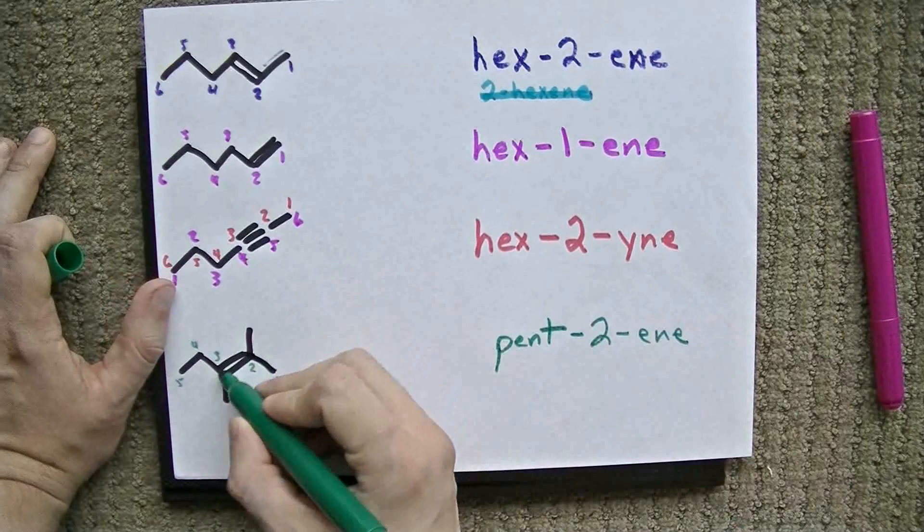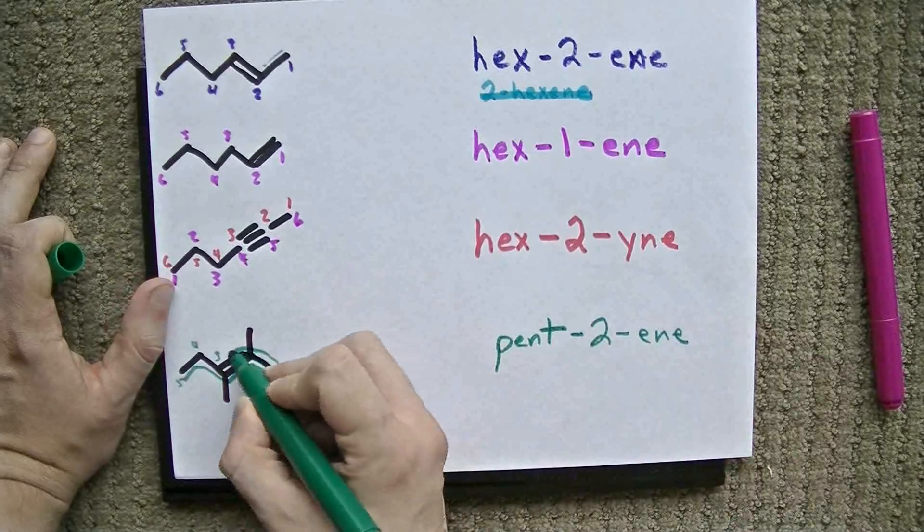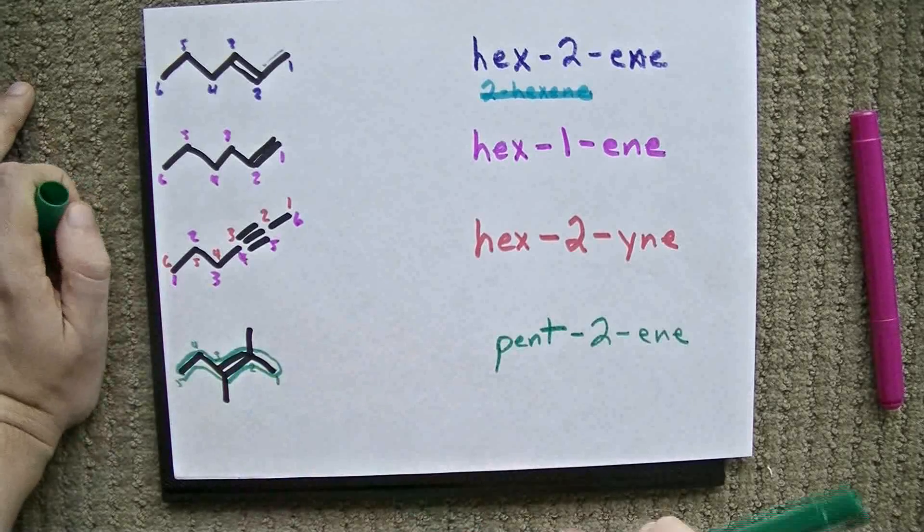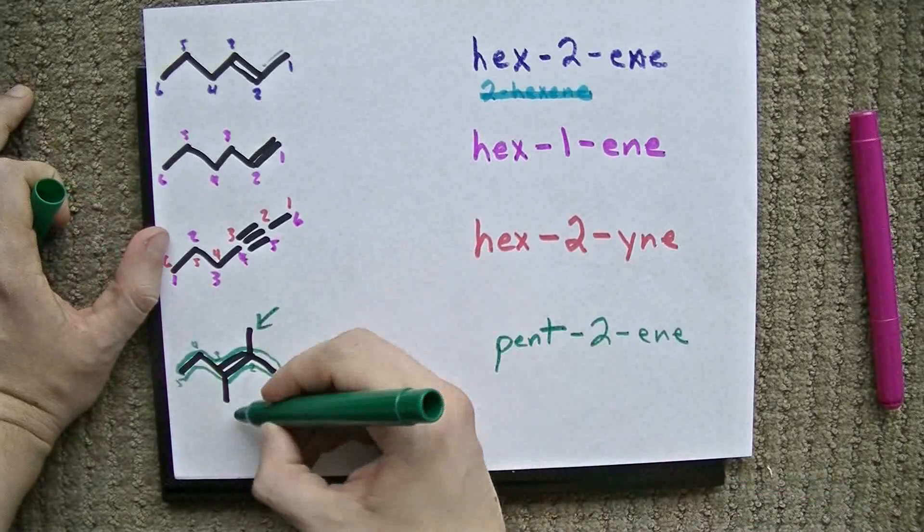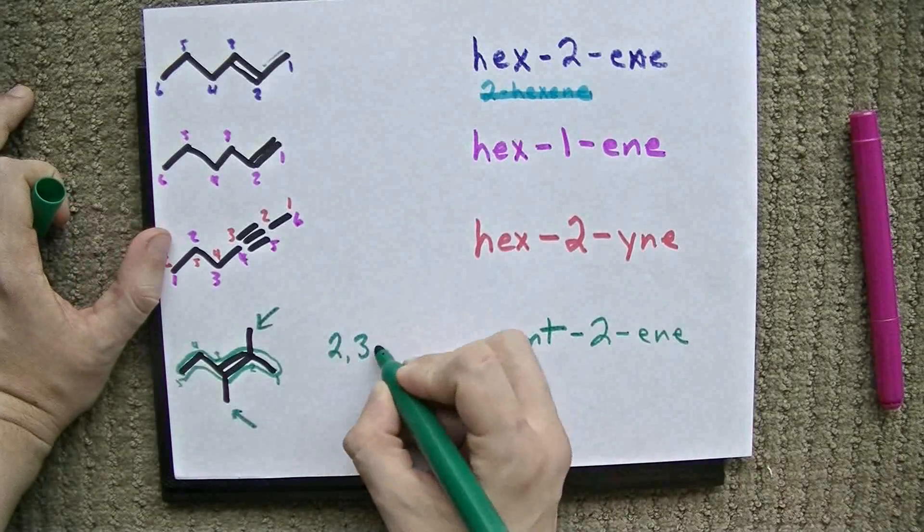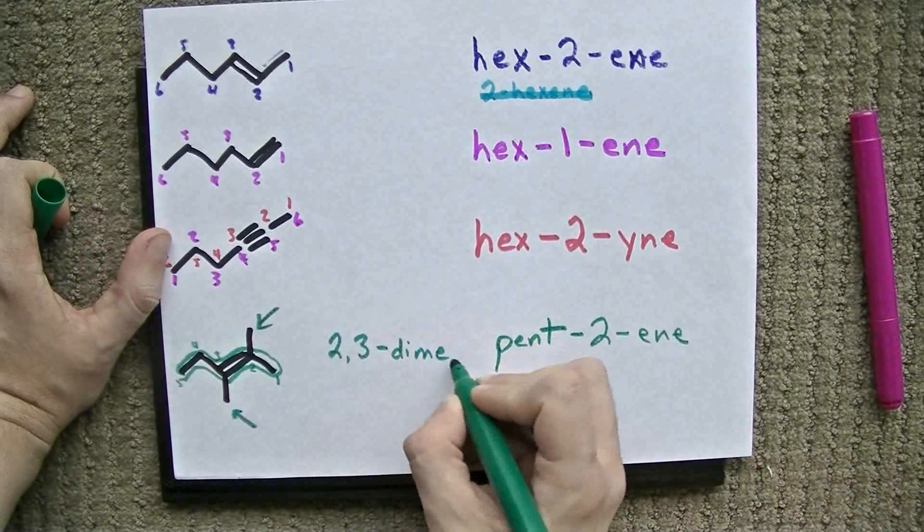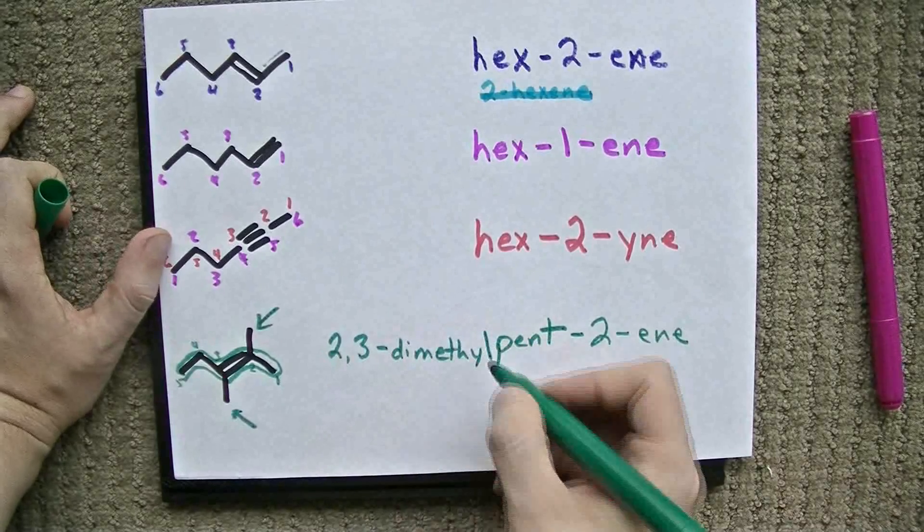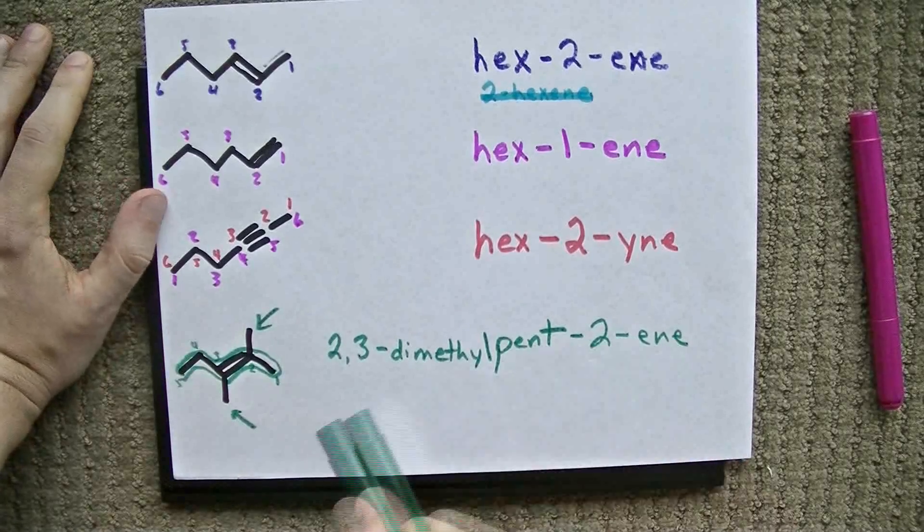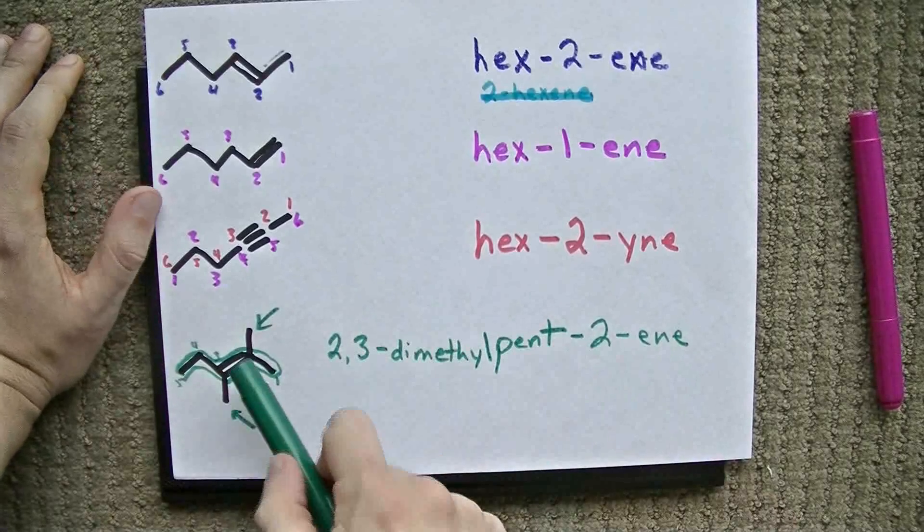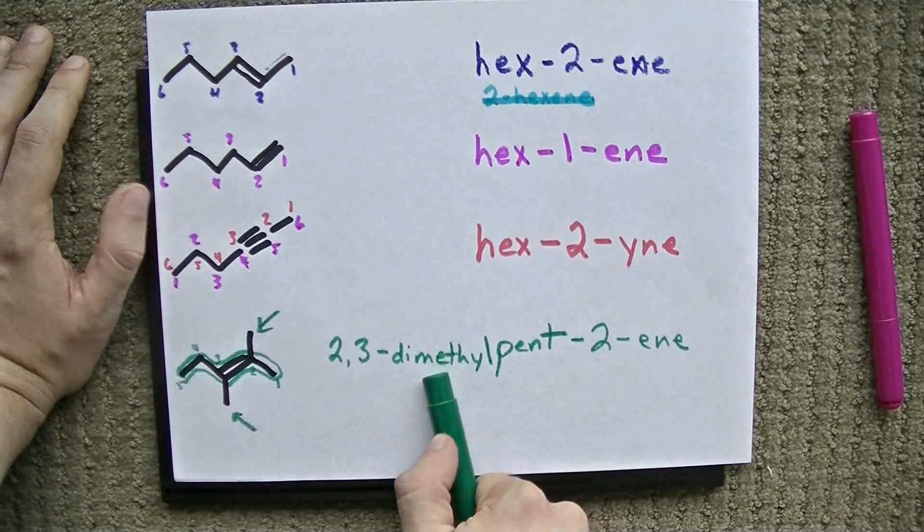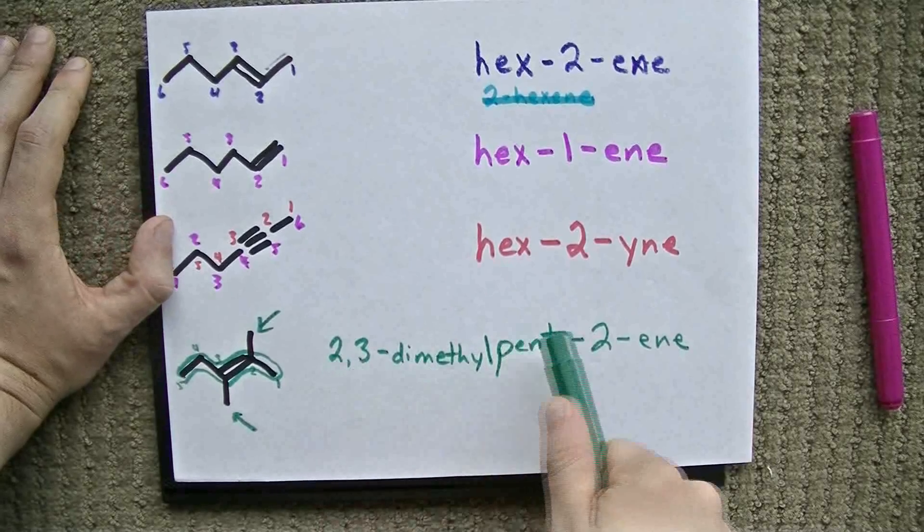And that takes care of these carbons in the chain, in the 5-carbon chain. Now, we also, you might notice, have single carbon chains hanging off of carbons 2 and 3 in the chain. That's why we need to add a 2,3-dimethyl. Well, there's no space in between methyl and pent-ene. So, we have a 5-carbon chain with a double bond starting at carbon number 2. Check. And also, off of carbons number 2 and 3, we have single carbon chains, or CH3 groups. 2,3-dimethyl-pent-2-ene.